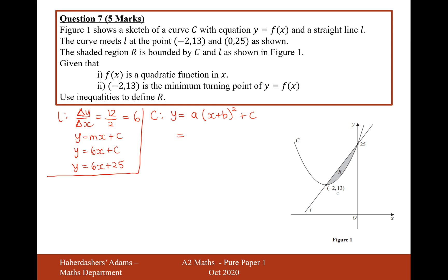Now I know that minus 2, 13 will be the minimum point, so what that means for me is that I know that it's going to be x plus 2 squared inside my bracket, and then plus 13 on the outside.